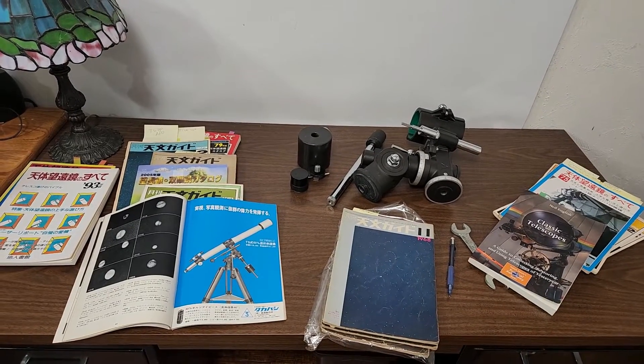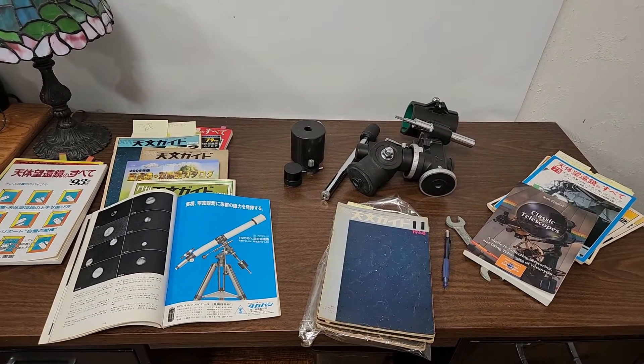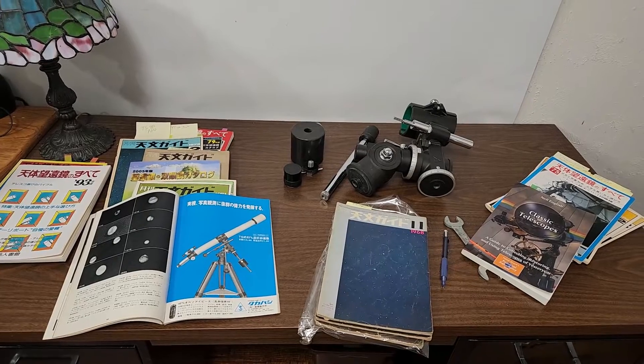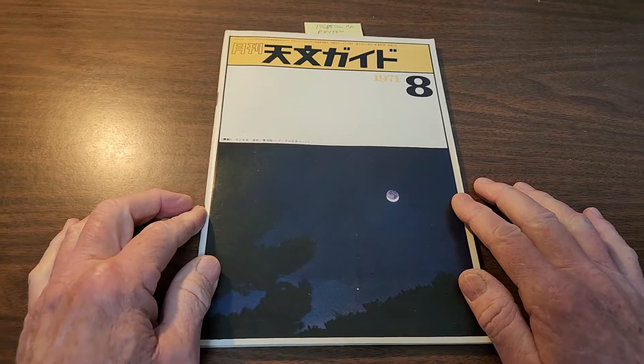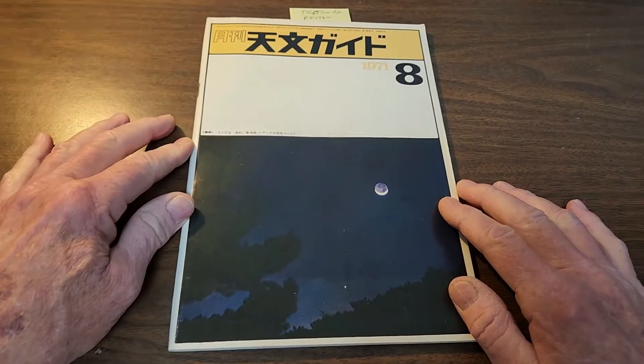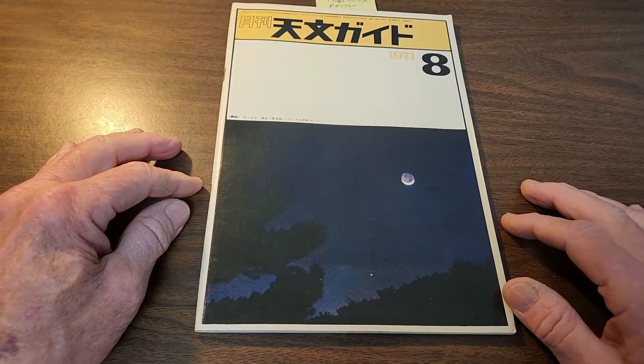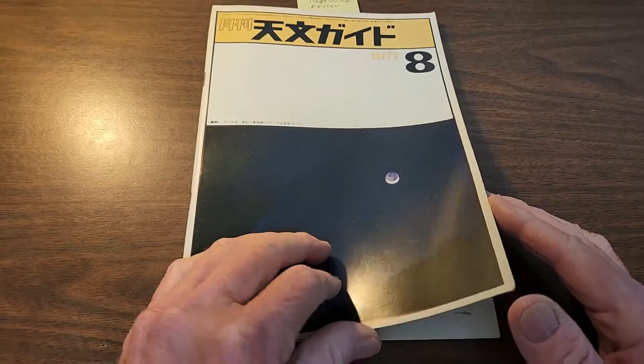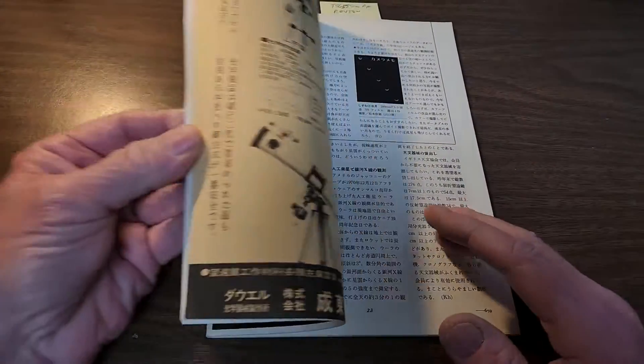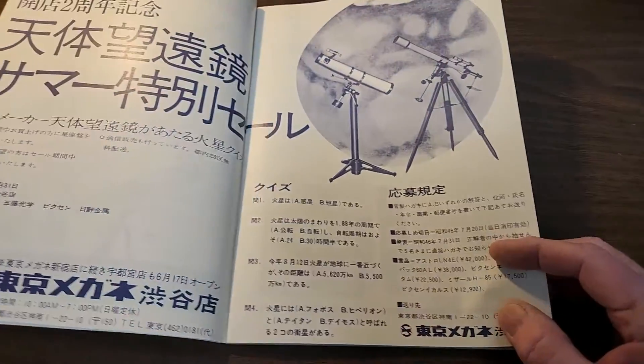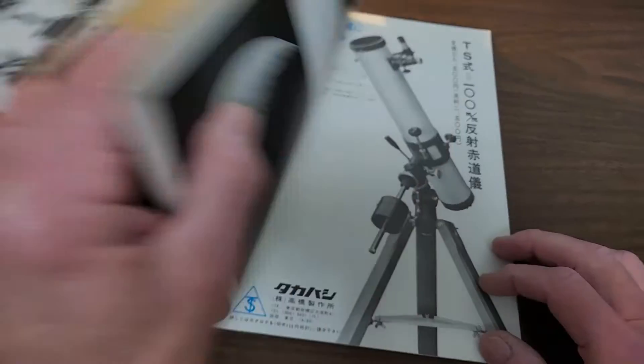This is what my desk looks like today. I've been doing some research on Takahashi telescopes. What a mess! For those of you who don't know what this is, this is Tenmon Guide, which is roughly the equivalent of Sky and Telescope magazine here in the United States. Same kind of thing. It has lots of ads, lots of reviews, lots of information about astronomy.